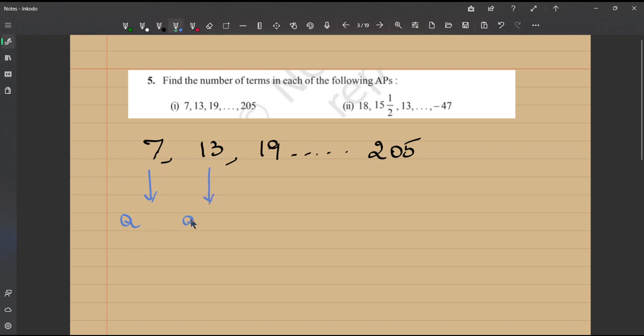The second term is A plus D, where D is the common difference. So we can easily find D using this, that is just 13 minus 7 will give you D. So let us rewrite whatever we know now.